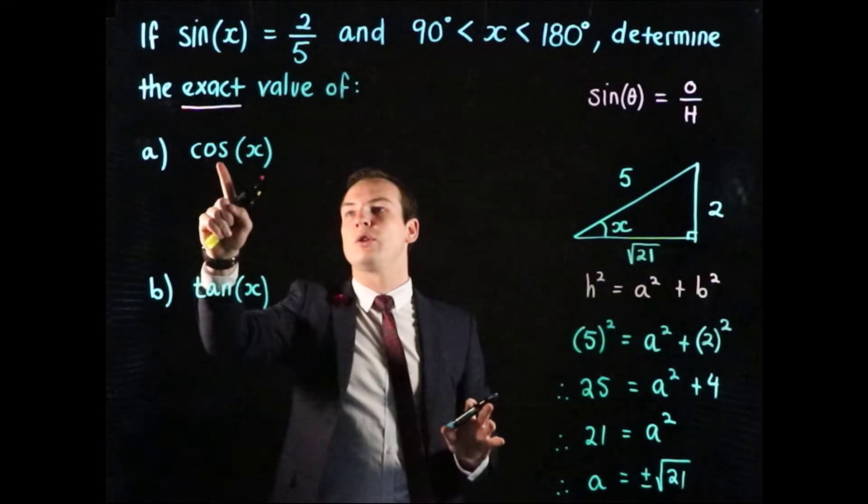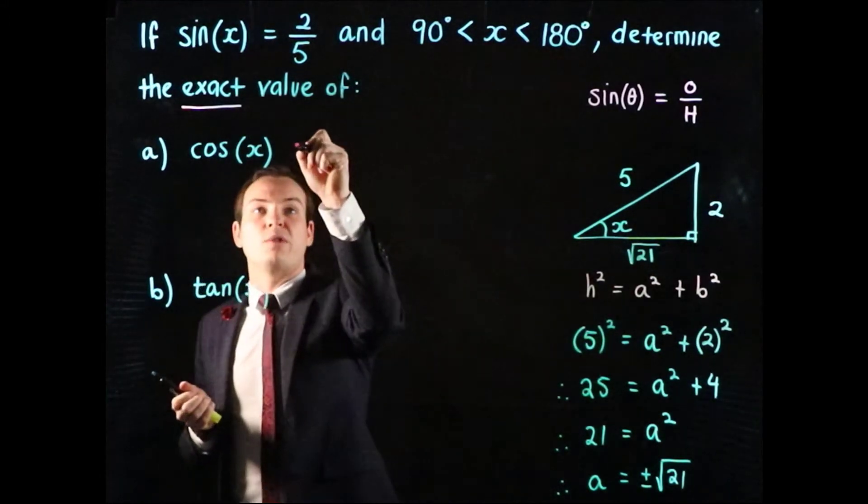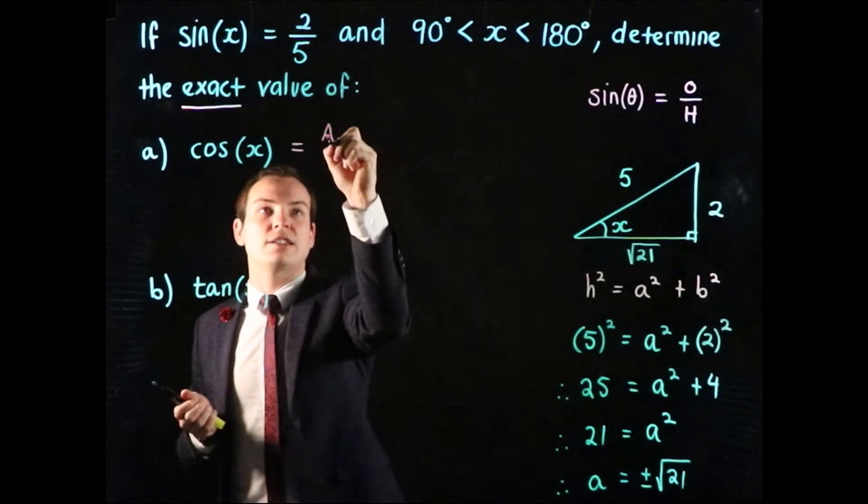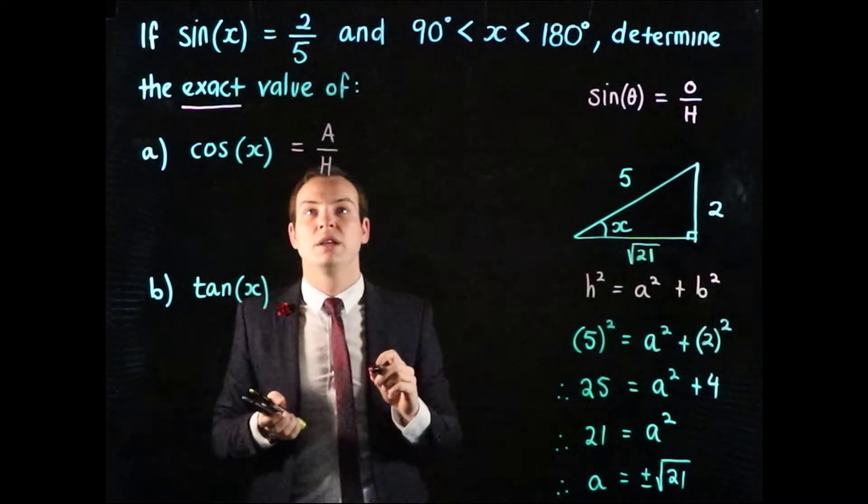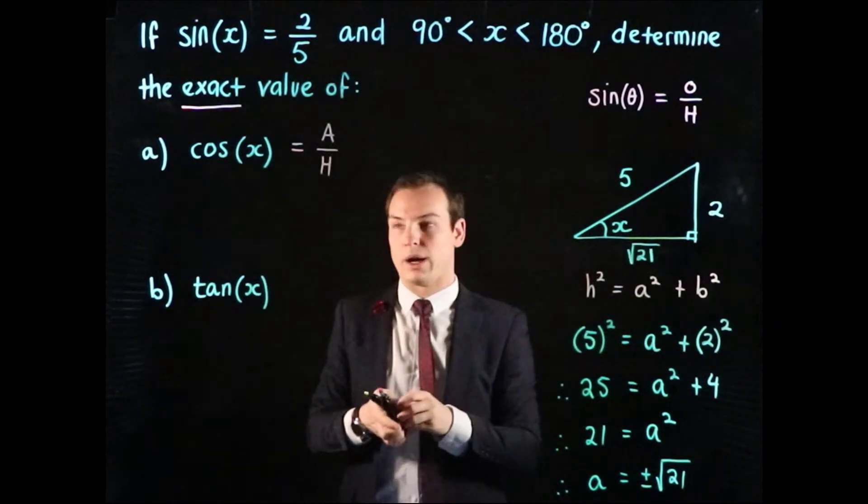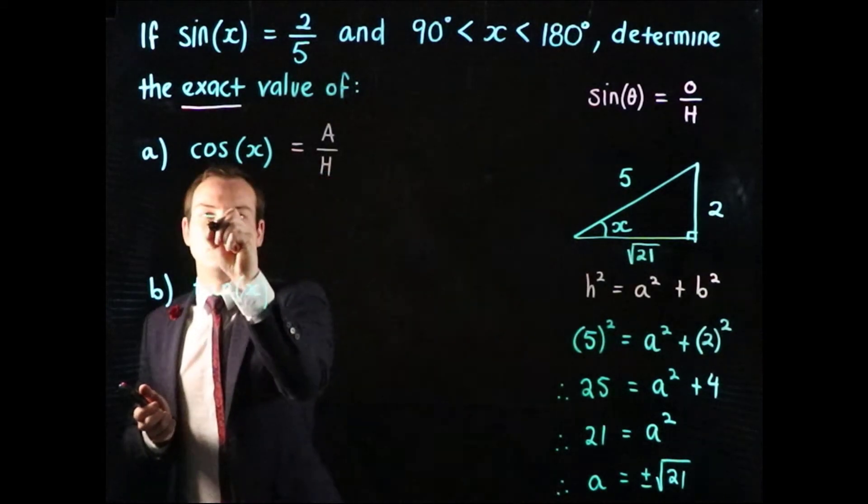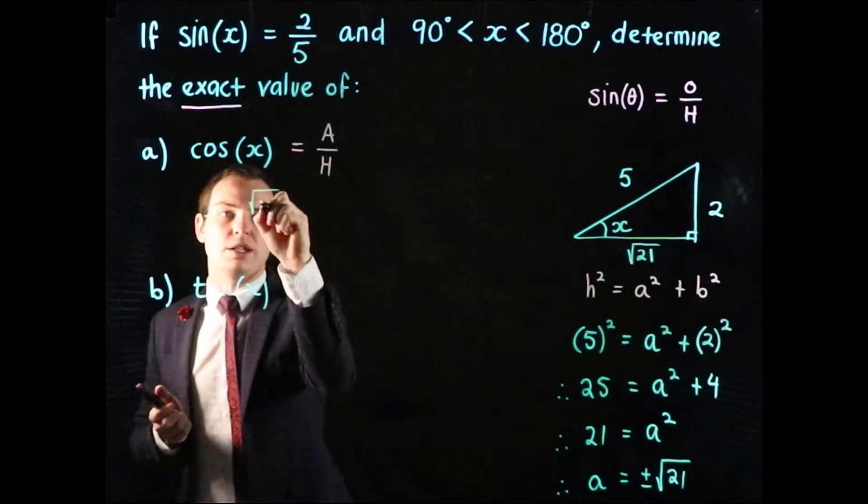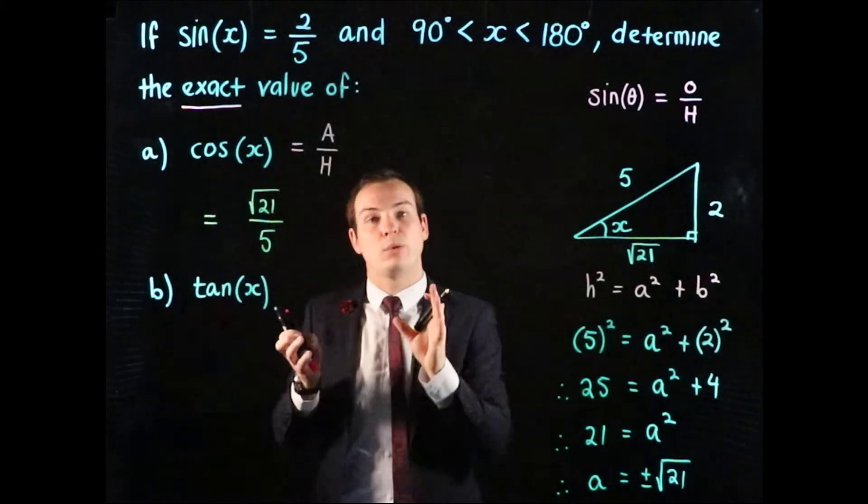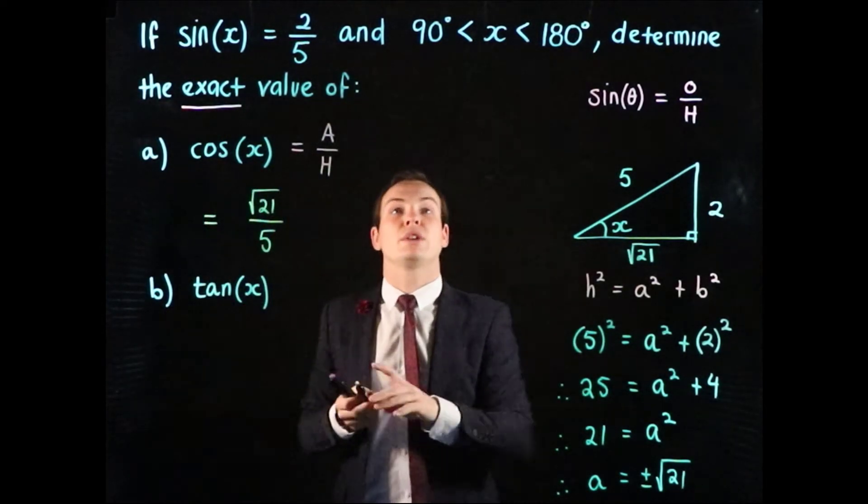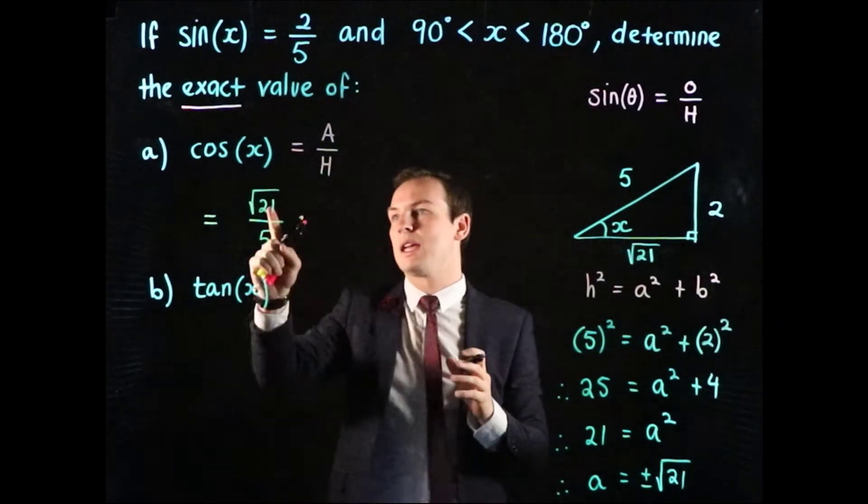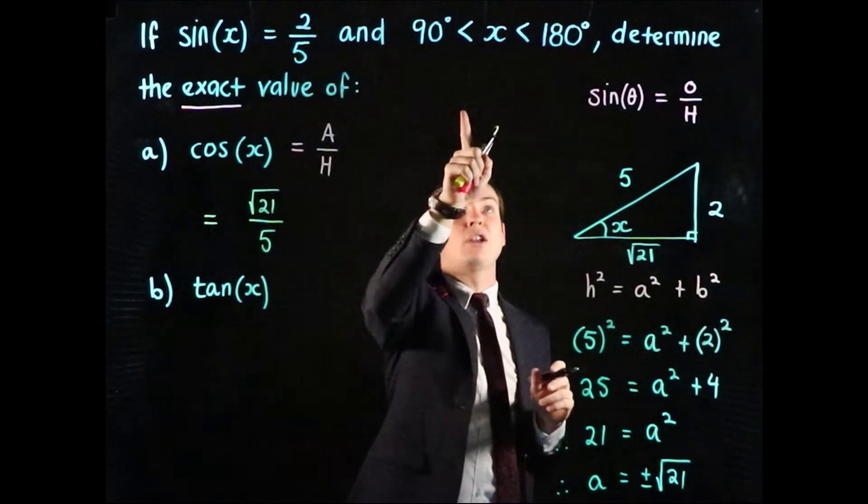Now we know cosine of x is going to equal the ratio of the adjacent side length over the hypotenuse's value. We now know the adjacent value is the square root of 21. So this equals the square root of 21 over 5. However, we're not quite done because we're told what quadrant we're in.